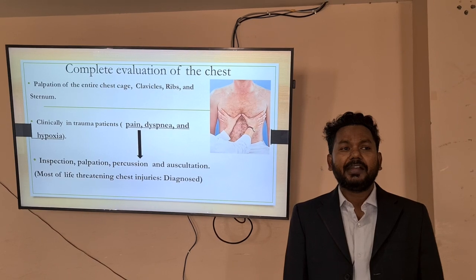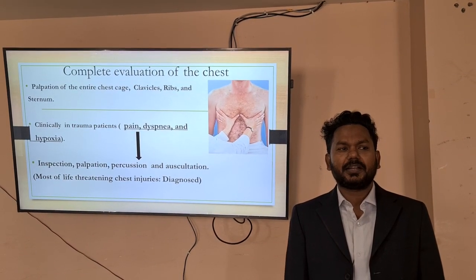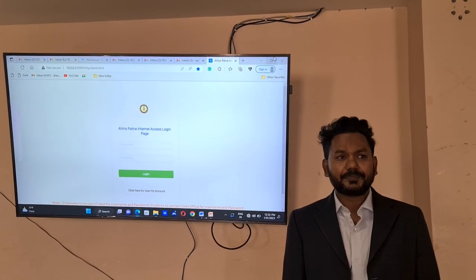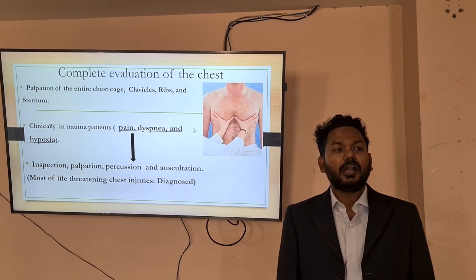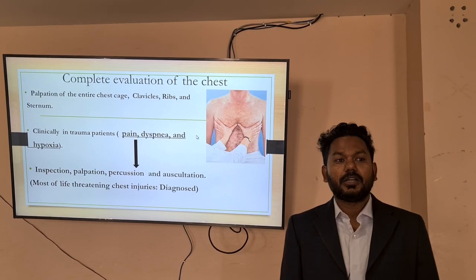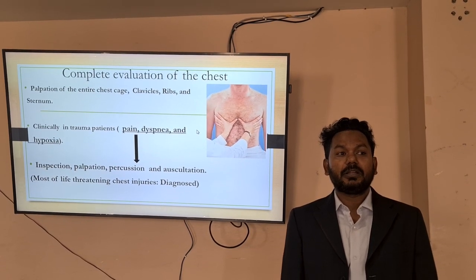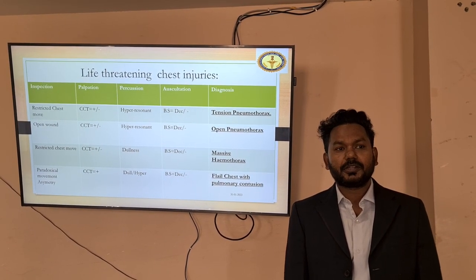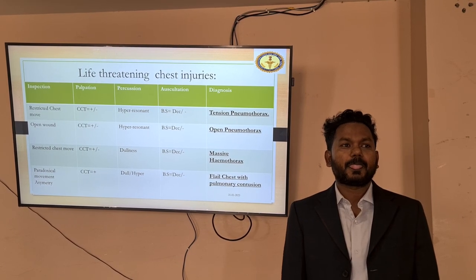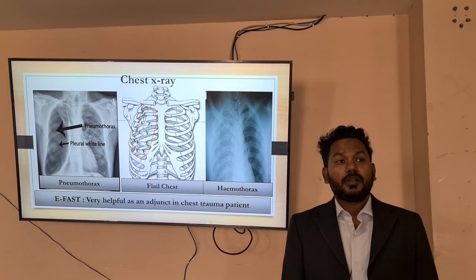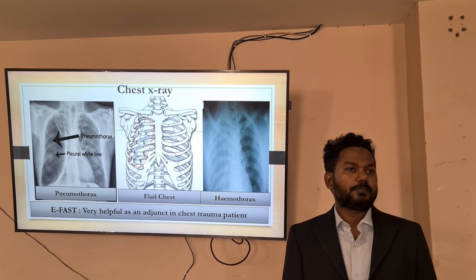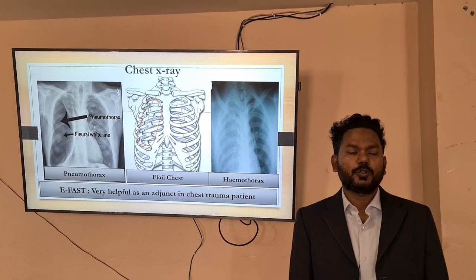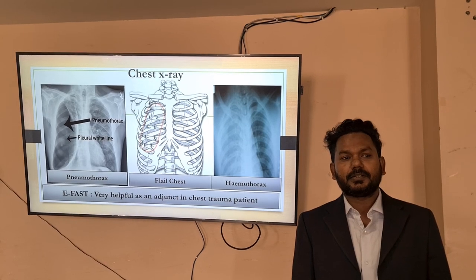Most chest trauma patients present with pain, dyspnea, and hypoxia. In all such situations, please perform the basic clinical examination of inspection, palpation, percussion, and auscultation — most life-threatening chest injuries can be diagnosed by this basic clinical examination, including tension or open pneumothorax, massive hemothorax, or flail chest with pulmonary contusion. A chest X-ray, which is an adjunct of the primary survey, is very helpful to diagnose pneumothorax, flail chest, or hemothorax. We should also consider eFAST as an adjunct in a chest trauma patient.